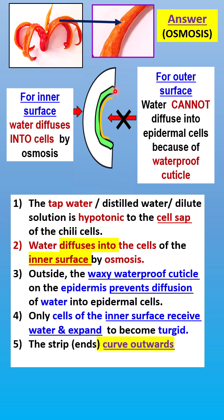Only the cells of the inner surface receive water and expand to become turgid. Because of the difference in length between the inner layers and the outer layers, the chili strip curves upwards. The inner layers are longer than the green epidermal layer, so the strip curves upward away from the center of the chili.